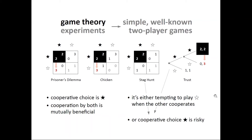Or it's not tempting to defect when the other cooperates, but cooperation is nevertheless risky — as in Stag Hunt. In Stag Hunt, if you expect your partner to cooperate, the best thing is to cooperate as well, but if you think the other might not cooperate, you should defect. The same applies to the first player in Trust: it only pays to cooperate if you expect the second player to respond in kind.